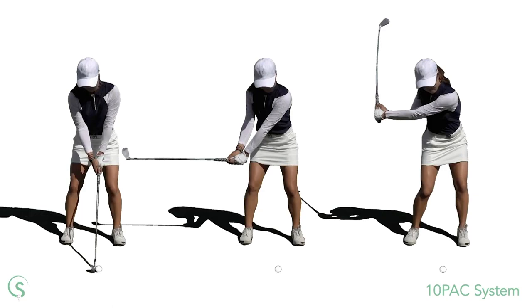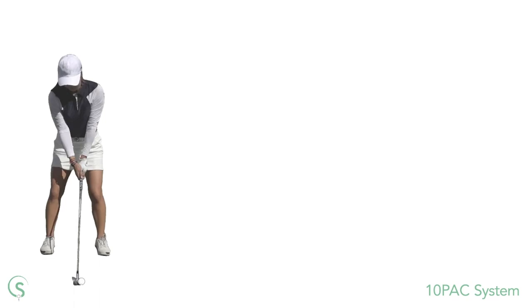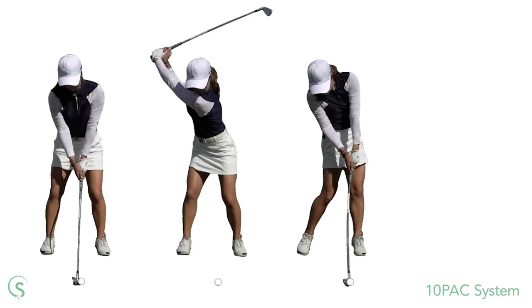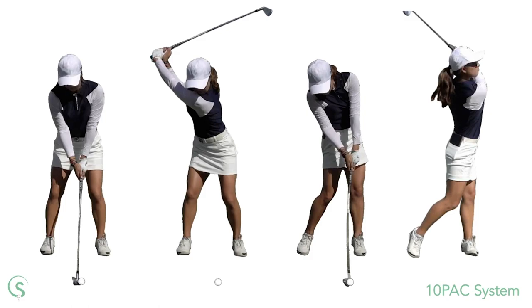We'll typically divide a swing by a few key positions. These are the address, the top of the backswing, impact, and the finish. We can then observe and describe these positions and what occurs in the periods of time between them. But when analysing a swing in detail, these divisions aren't enough.